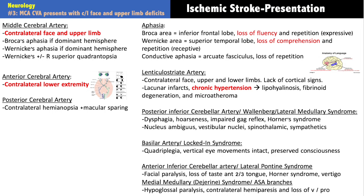Now let's revisit brainstem stroke syndromes. The most important to remember, and one seen in real life, is the posterior inferior cerebellar artery stroke — the lateral medullary syndrome or Wallenberg syndrome. We're talking about the lateral medulla, supplied by the PICA. If a patient has dysphagia, hoarseness, and an impaired gag reflex — any of those three — you know the lesion is in the lateral medulla. That's essentially game over for localization.